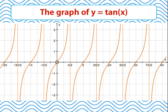Whilst tan is a periodic graph with a period of π, we note that this time it is not an oscillating function. The tan graph doesn't have amplitude — there isn't a maximum and a minimum. The graph doesn't oscillate the same distance above the x-axis as it does below. So tan doesn't have amplitude.